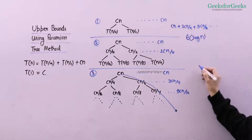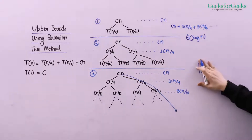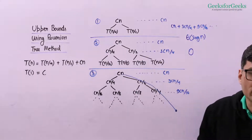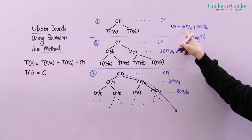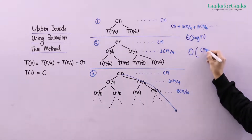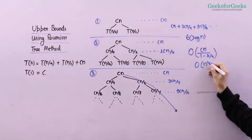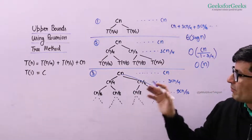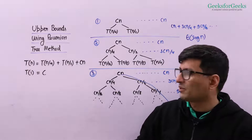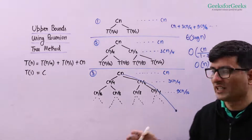One way is to use the exact formula for a finite geometric series, but that gets complicated. Since we're finding an upper bound anyway, we can use big-O and sum the infinite series instead. For a geometric series with ratio less than 1, the sum is a/(1 − r), giving Cn/(1 − 3/4) = 4Cn, which is O(n). So the upper bound on this recurrence is O(n) — a good, tight linear upper bound.